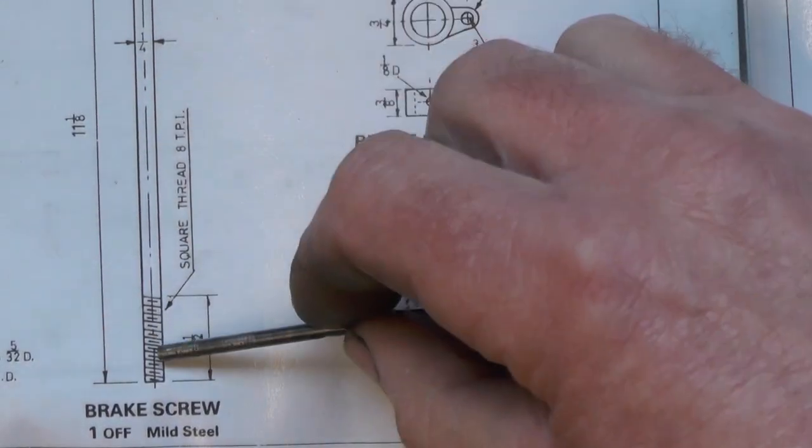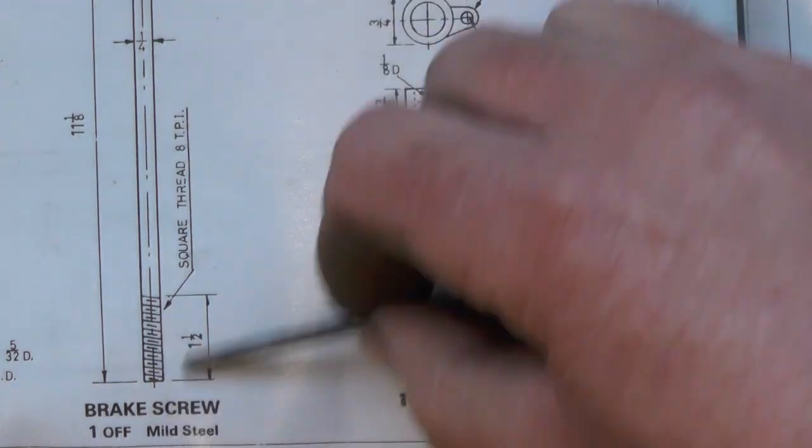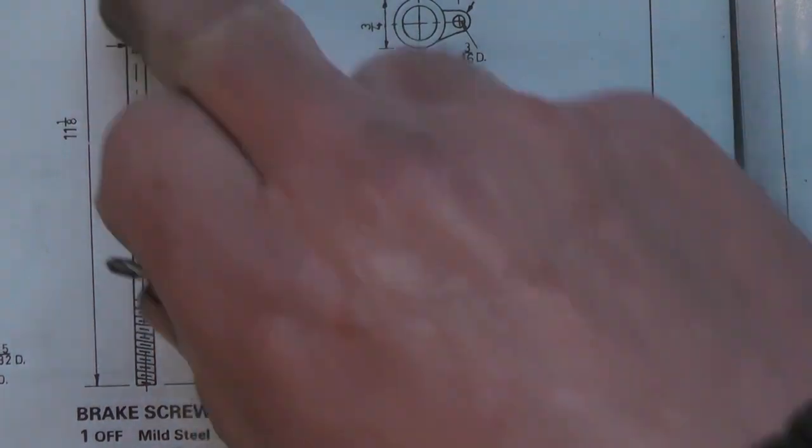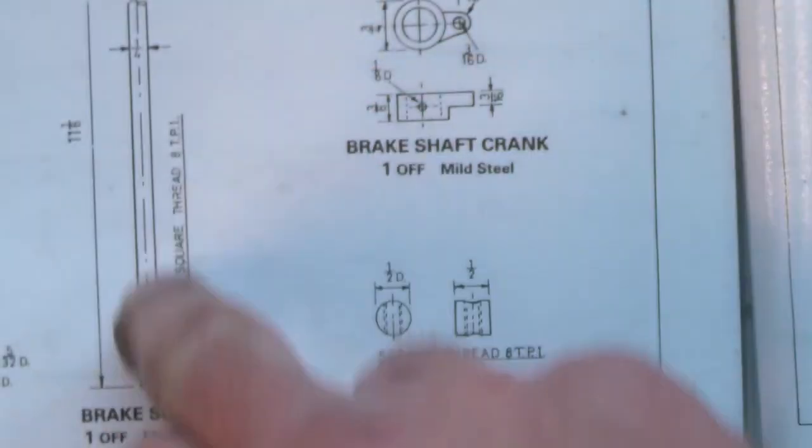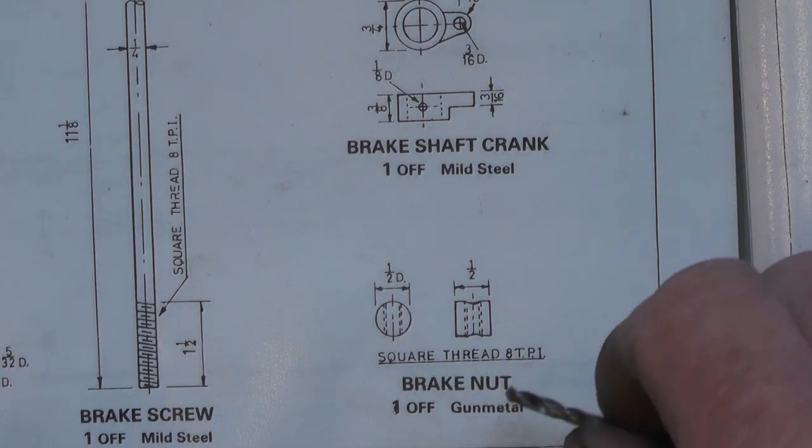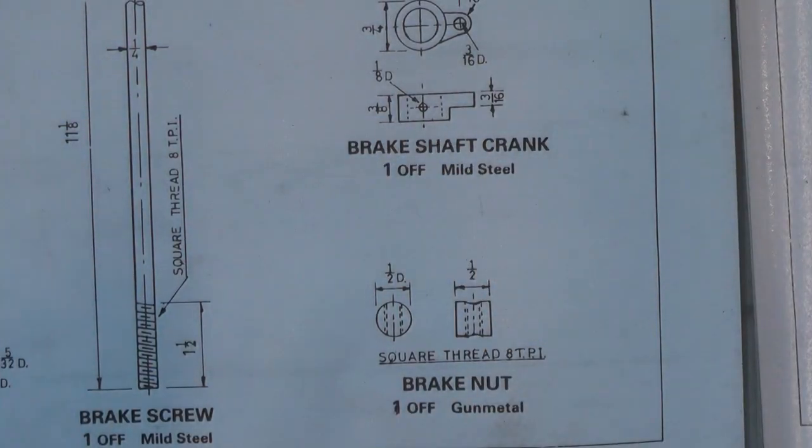So I've got to put a square thread on this screw. Like I said, that's not too much of a problem because you're doing an external thread. But this nut, I'll explain, because it's very very small diameter. The actual screw's only a quarter diameter, so the brake nut core diameter is less than that obviously.